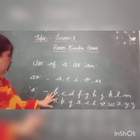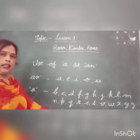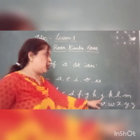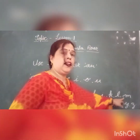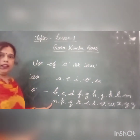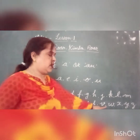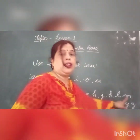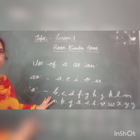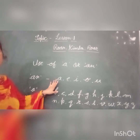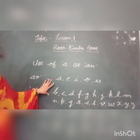Okay students, these are consonants: B, C, D, F, G, H, J, K, L, M, N, P, Q, R, S, T, V, W, X, Y, Z. These are 21 letters that are consonants. And 5 are vowels. Total 26 letters in our English alphabet.